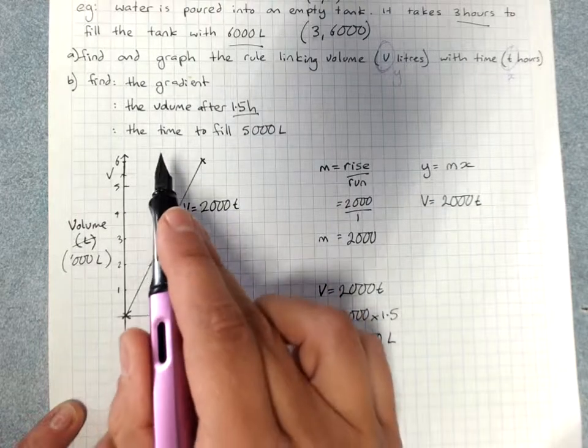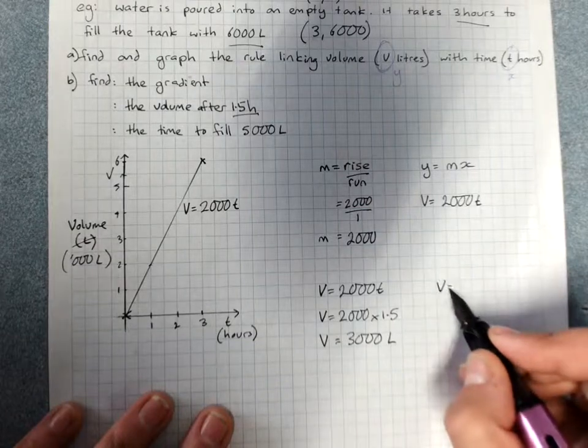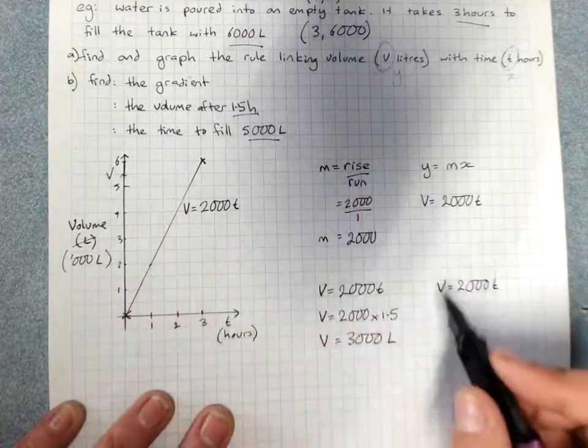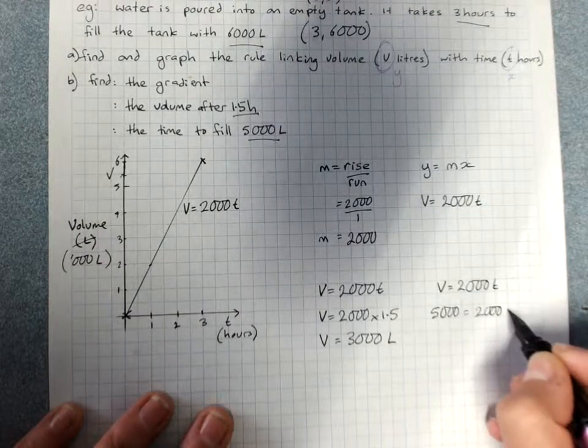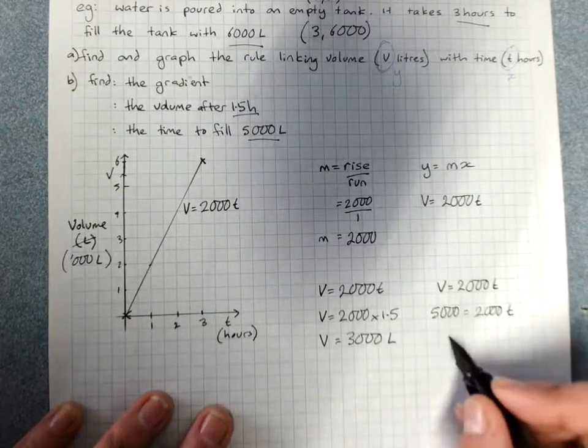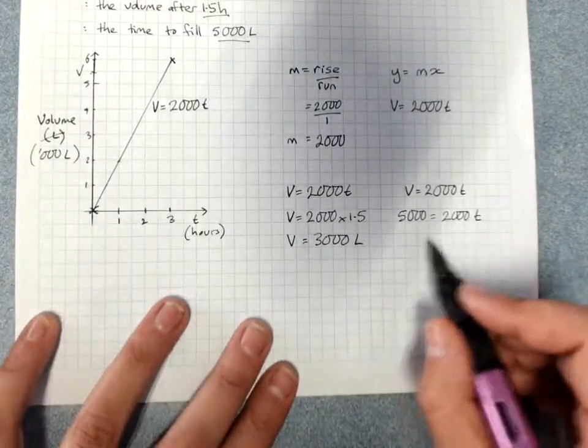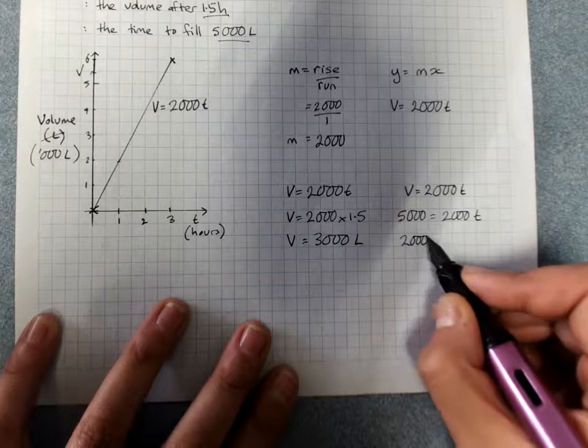Find the time taken to fill 5,000 liters. Use the formula. V equals 2,000 T. Substitute in the volume that we know. 5,000 is 2,000 times T. I will need to divide by 2,000 on both sides. Remembering if you're feeling uncomfortable about this equation, it probably helps you out if you just swap sides.